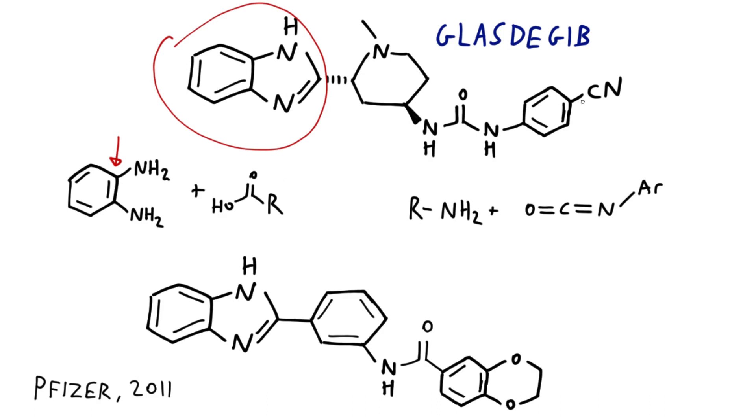On the right, this aryl-substituted urea is derived from the reaction of an amine with an aryl isocyanate. But the molecule's most interesting feature is this core, because they have to set up a 2,4-trans-disubstituted piperidine ring with enantio- and diastereoselectivity.